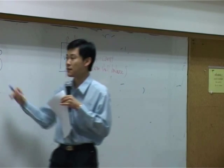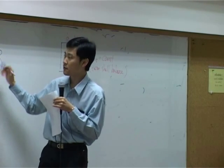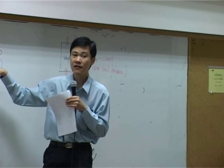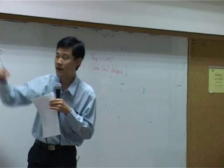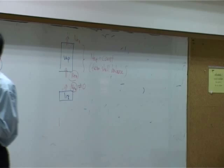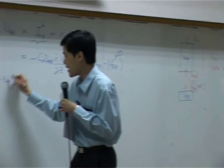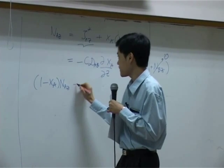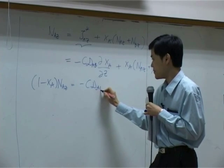If Na is not 0, but Nb is 0, then you can bring Na from right hand side to the left hand side. So you get 1 minus xA, Na z equal to minus z dAb.